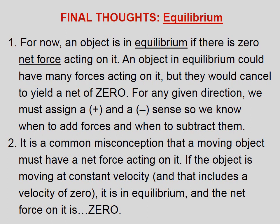Final thoughts on equilibrium: an object is in equilibrium if there is zero net force acting on it. An object in equilibrium could have many forces acting on it, but they would cancel to yield a net of zero. For any given direction, we must assign a positive and negative sense so we know when to add forces and when to subtract them. It is a common misconception that a moving object must have a net force acting on it — if the object is moving at constant velocity, including a velocity of zero, it is in equilibrium and the net force on it is zero.